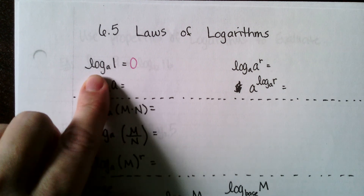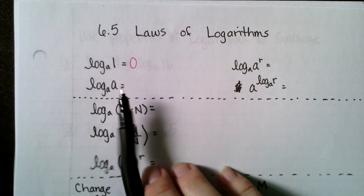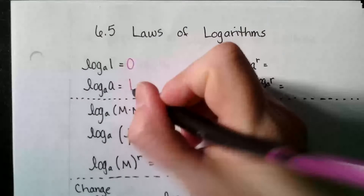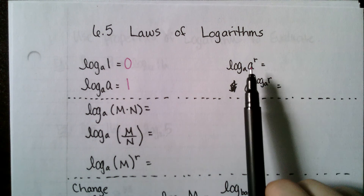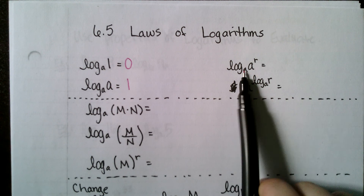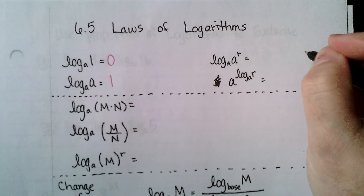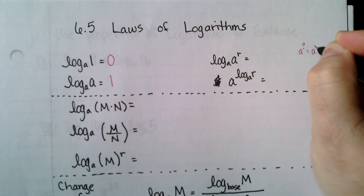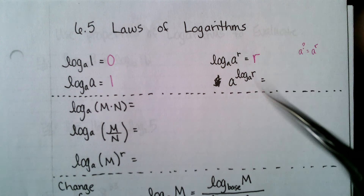a to the zero power equals one. Then we have: a to what power gives us a? That answer is one — a to the first power equals a. This one may be new: it's asking a to what power gives a to the r. So the question is a to what power equals a to the r, and the answer is r.